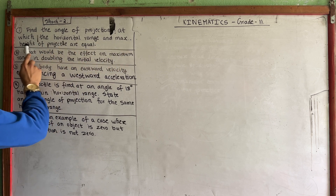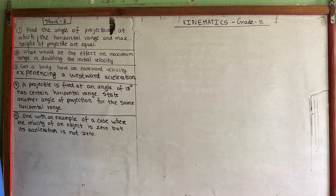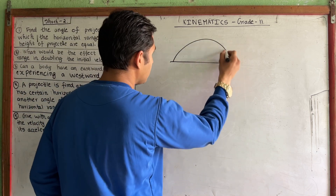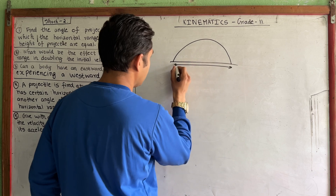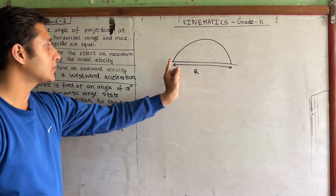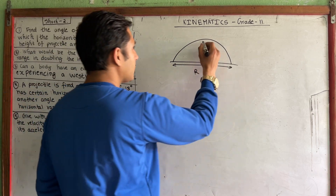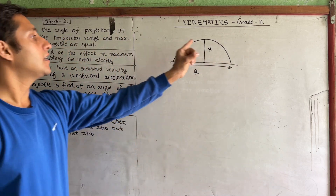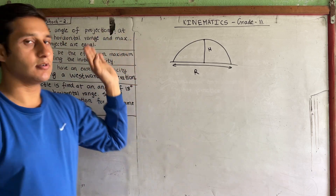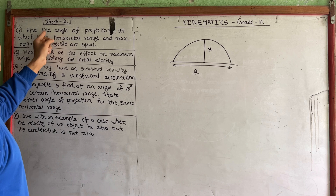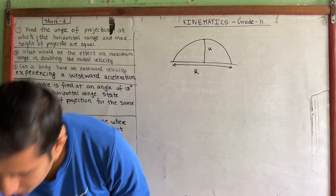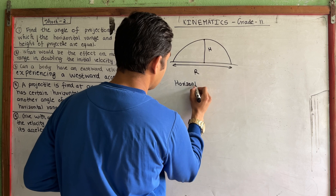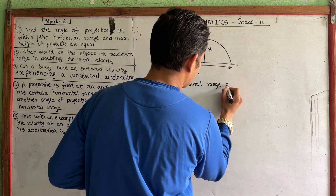First question: Find the angle of projection at which the horizontal range and maximum height of a projectile are equal. This is a projectile motion problem. The projectile has a range — the horizontal distance — and a maximum height. We need to use the formulas for horizontal range and maximum height.